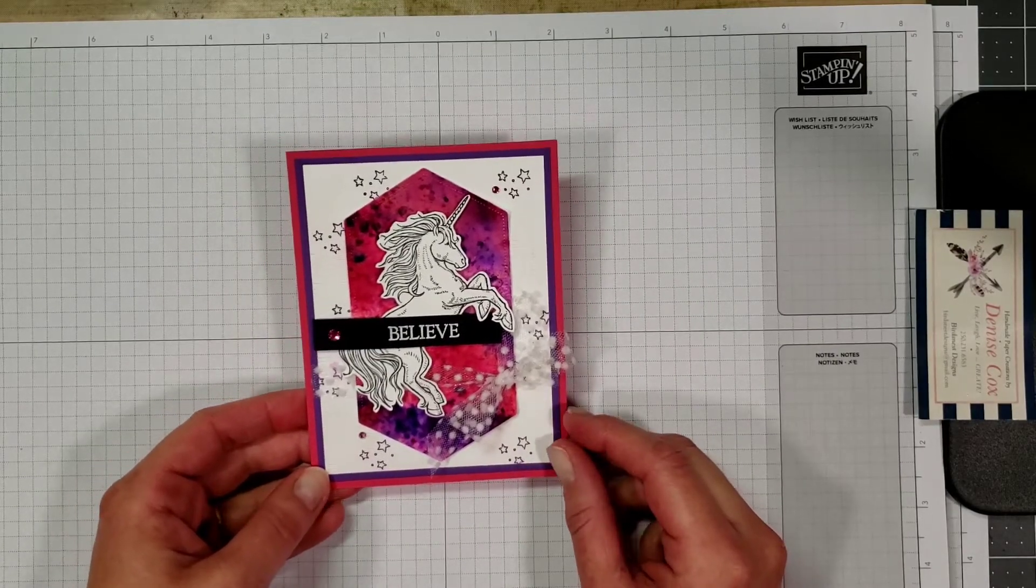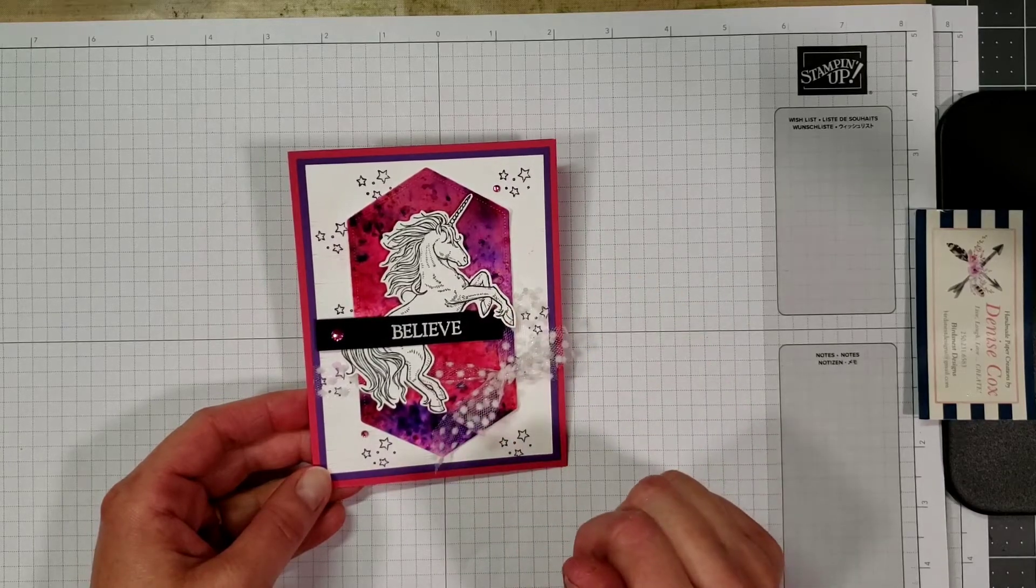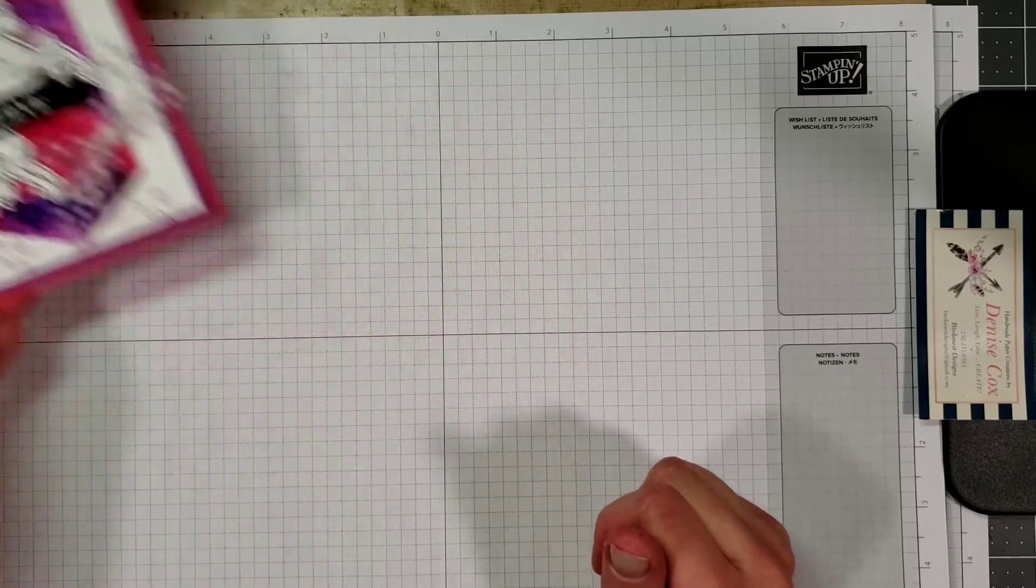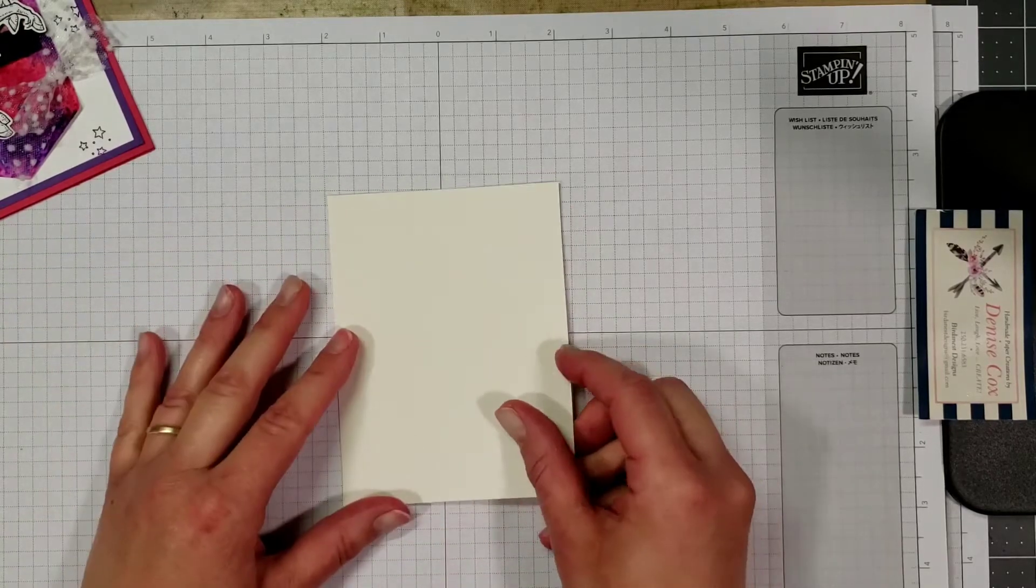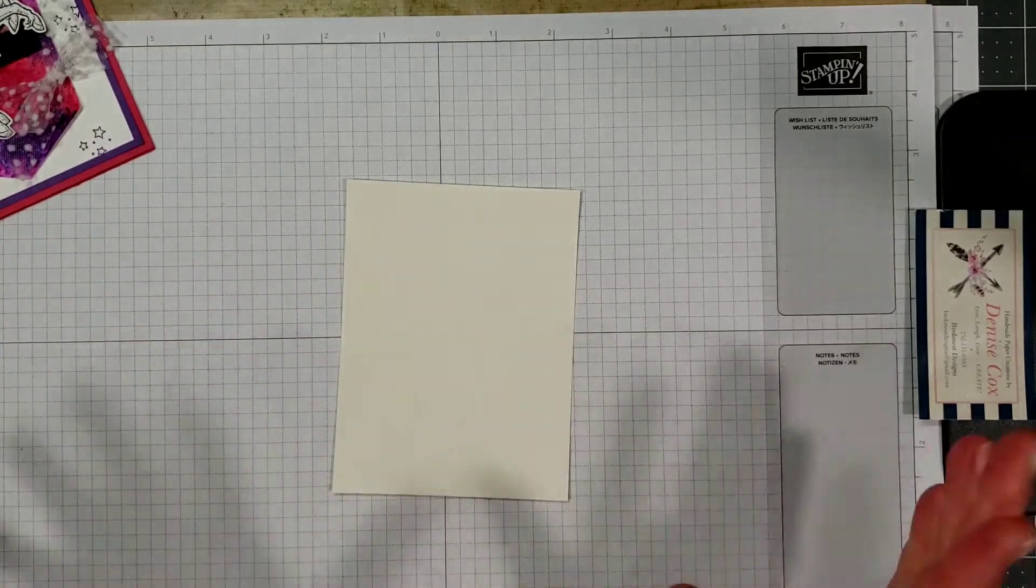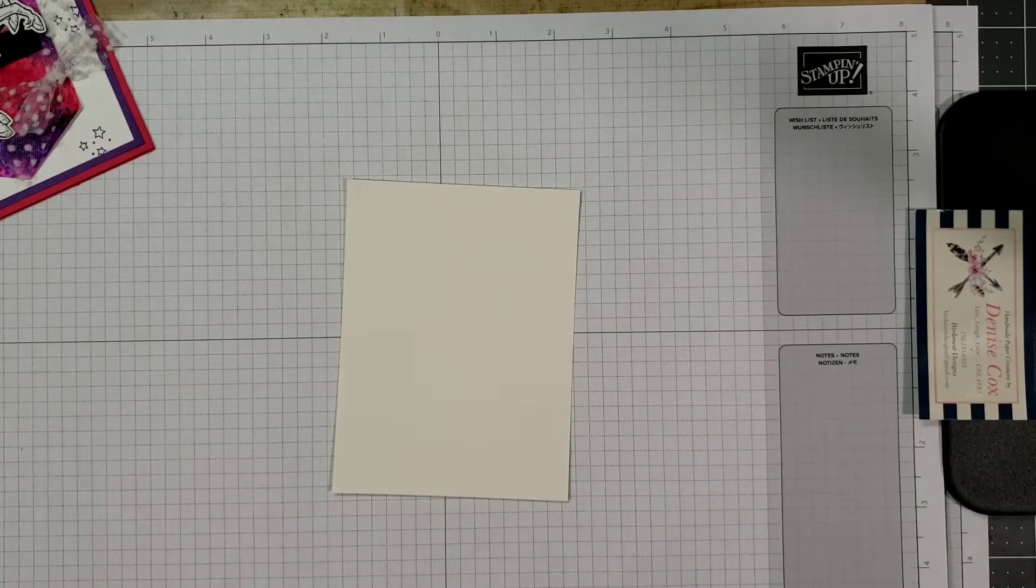So let's get to it. The first thing we're going to do is make the pigment sprinkles background. To do that I've got a piece of watercolor paper here, it's cut just a piece of scrap.